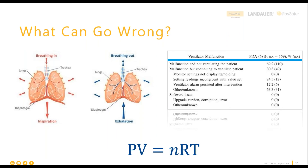I want to hit on the interdependency between all those parameters. Those relationships are defined by the ideal gas law and Boyle's law. The ideal gas law shows the effect that a change in temperature would have on either pressure, volume, or both — an increase in temperature causes an increase in pressure, volume, or both, and vice versa. There are relationships between gases that are really important to understand.